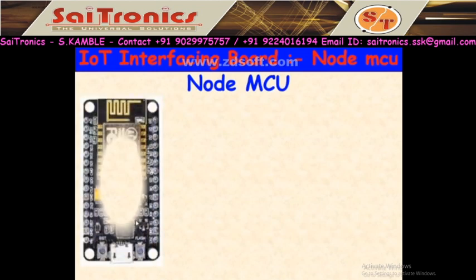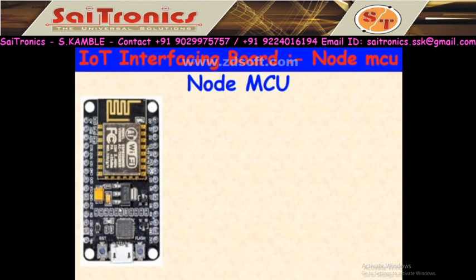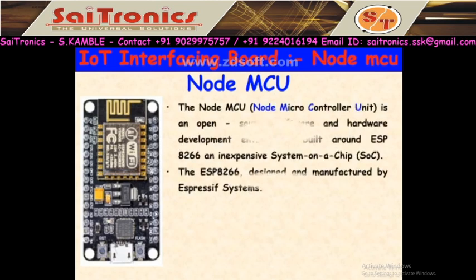The new solution for IoT is NodeMCU, which is a combination of Arduino and Wi-Fi — Arduino compatible plus Wi-Fi combined. The cost of this system is very less, only 300 rupees. So cost is reduced, hardware is reduced, and it becomes compact. NodeMCU (Node Microcontroller Unit) is an open source software and hardware development environment built around the inexpensive ESP8266 system.